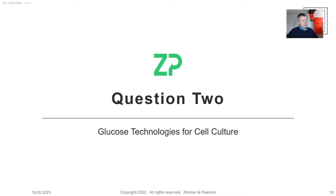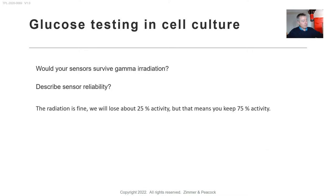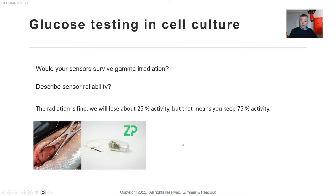Question number two came in about glucose sensing. At ZP I started my career in glucose sensing around 2001, and we started ZP nine years ago, so we have a long history here. One question was whether our sensors survive gamma radiation. Yes — sterilization options include EO (ethylene oxide), EB, and gamma radiation. I would not suggest autoclave for biosensors due to high temperature and high humidity. Gamma radiation is fine as long as you keep the dose down.